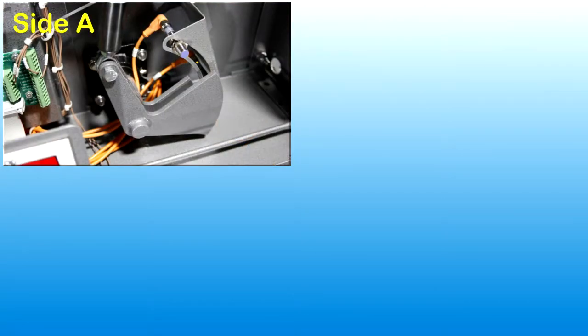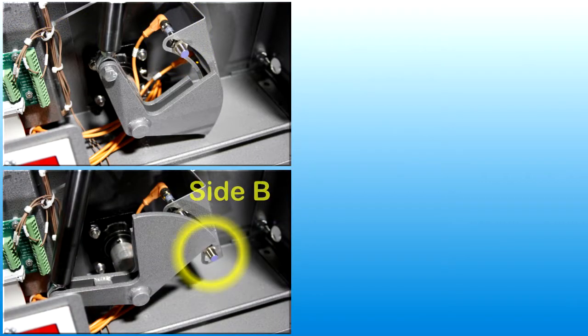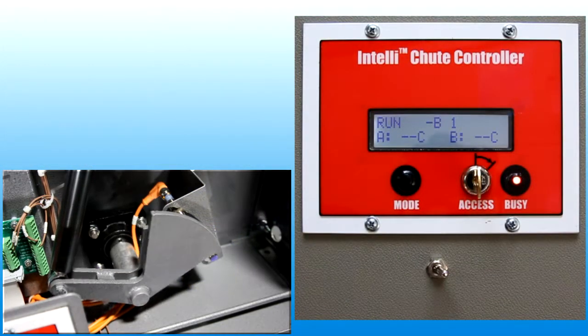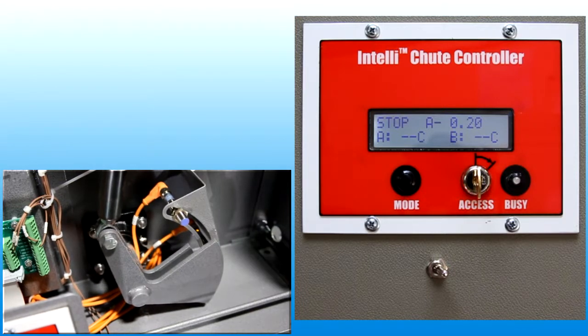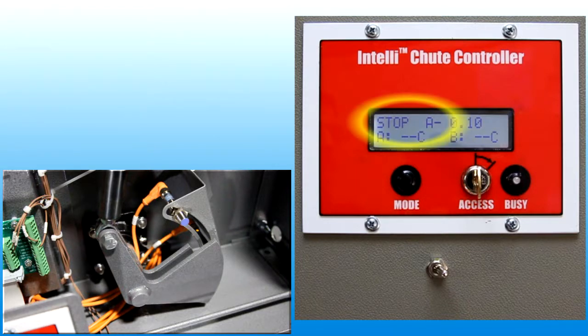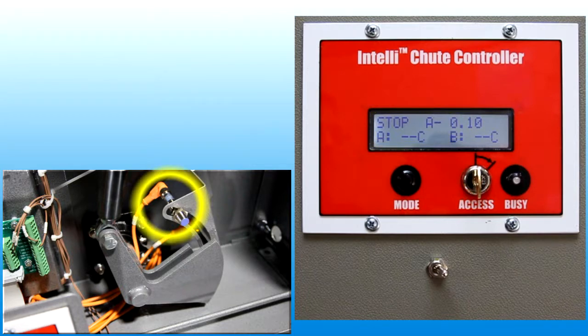The diverter mechanism position sensors detect when the plate is set up for side A, vertical position, or side B, angled position. When the control system drives the actuator motor, it uses the sensor states to determine diverter plate movement and position. Please note, the control system logic considers the diverter plate to be in position A when the position A sensor is not covered by the metal flag of the actuator lever linkage.